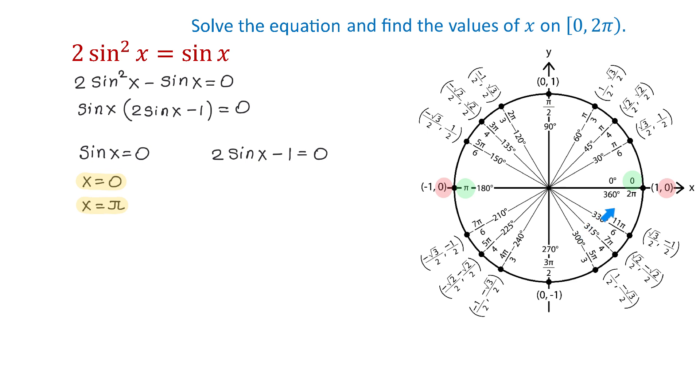And we will not include 2π because this interval does not include 2π. As a side note a bracket shows that this end point is included and a parenthesis shows that this end point is not included.